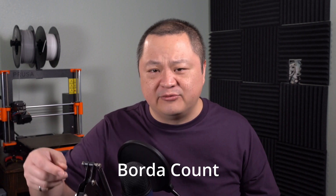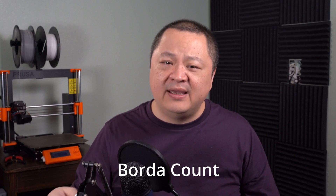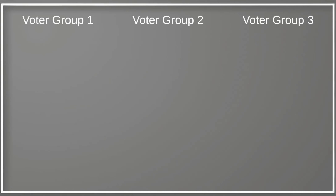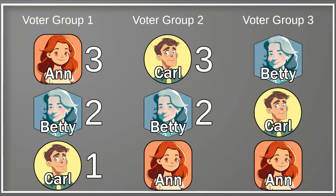The third rule set is known as a Borda count. In a Borda count, voters rank the candidates, and a point value is assigned to each candidate based on everyone's preference order. In our example, voters in group one assign 3 points to Anne, 2 points to Betty, and 1 point to Carl. All the other groups assign 3, 2, and 1 points according to their preference schedule as well.